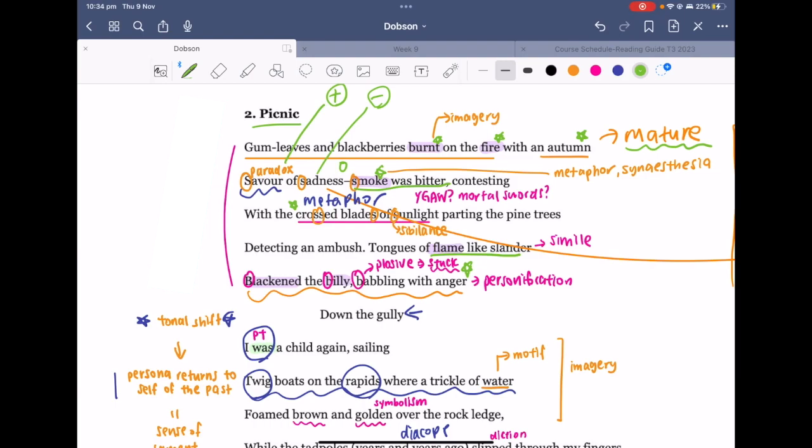You could also make note of the sibilance here. We have a lot of S sound here in "crossed blades sunlight," but even in the previous sentence we have "save us at the smoke." You can make note of how that's adding to the sense of hissing sound.